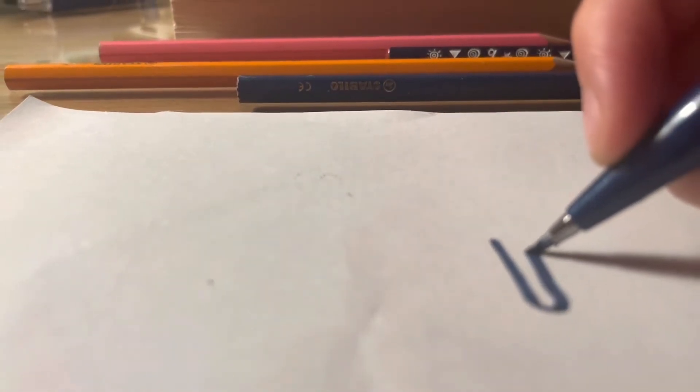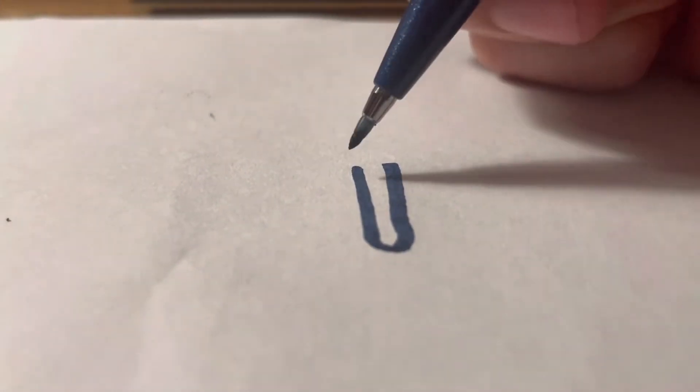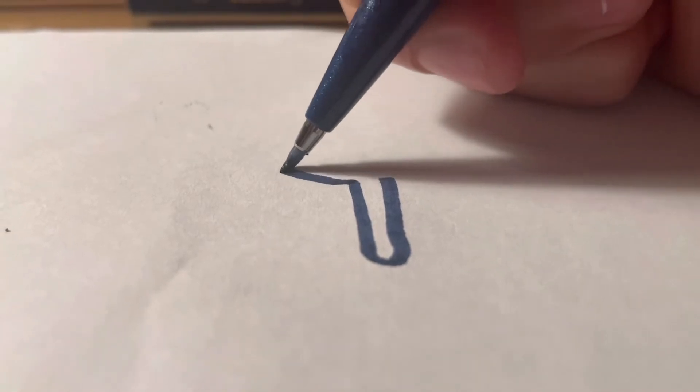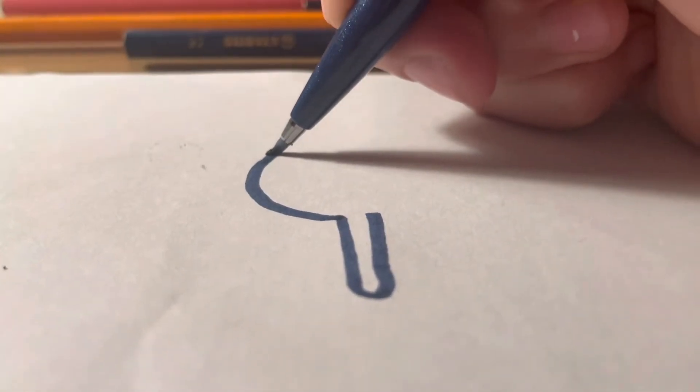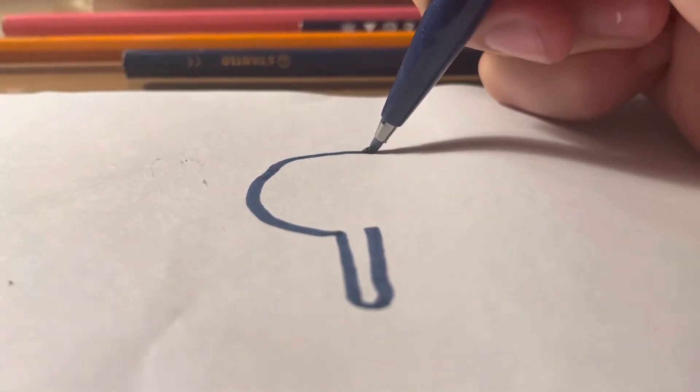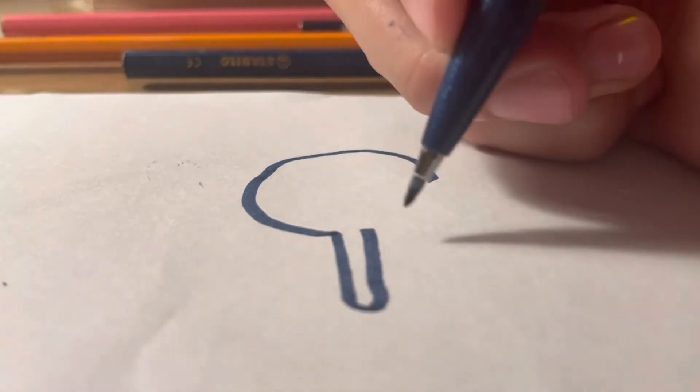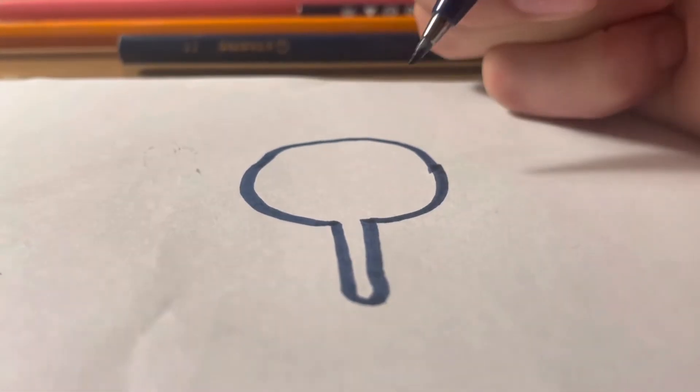First, start off by drawing a straight line. Then do a little popsicle stick shape. Then you want to draw a circle like that.